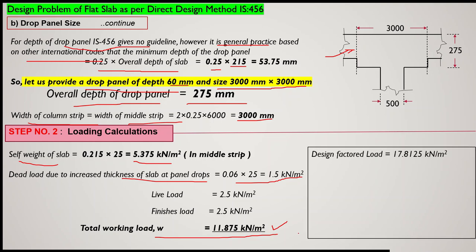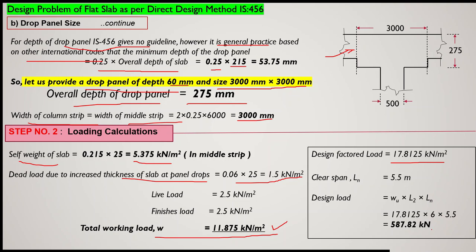The design factored load, after multiplying by the partial safety factor, comes out to 17.825 kN/m². The clear span ln (face-to-face of columns) is 5.5m. The design load = factored load × span length × clear span = 587.82 kN. This design load is used to calculate the design bending moments.